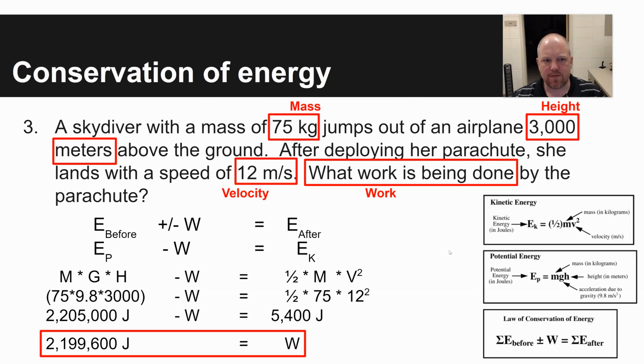The third problem is definitely the most difficult here. It involves conservation of energy. For conservation of energy problems, you're going to need to determine more than one type of energy and do an accounting for where some of it go. It says a skydiver with a mass of 75 kilograms jumps out of an airplane 3,000 meters above the ground. After deploying her parachute, she lands with a speed of 12 meters per second. What work is being done by the parachute? In this problem, you need to figure out what's your energy before, what's your energy afterwards, and it asks you to solve for work.